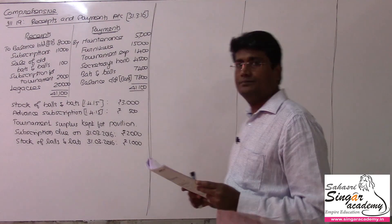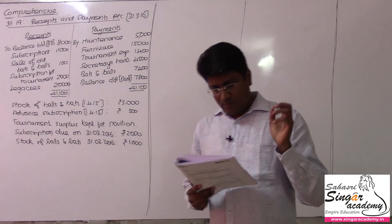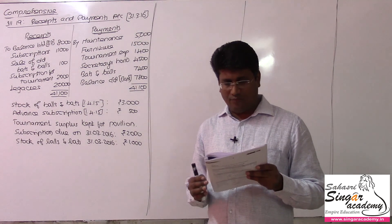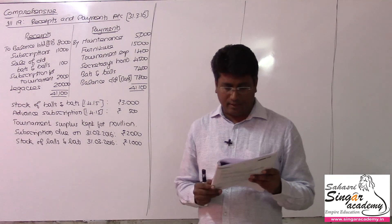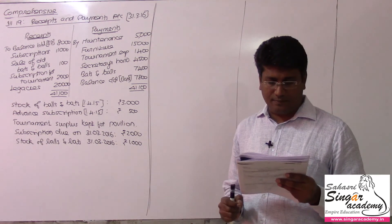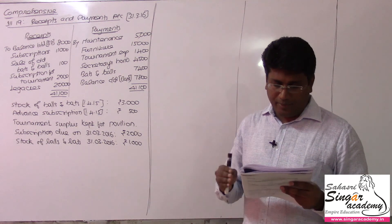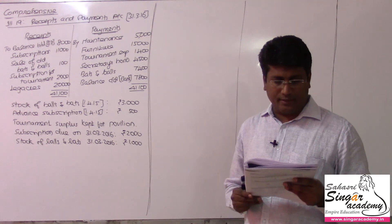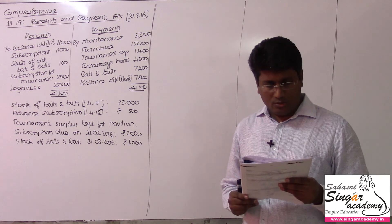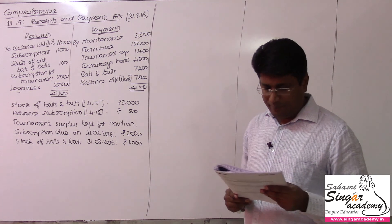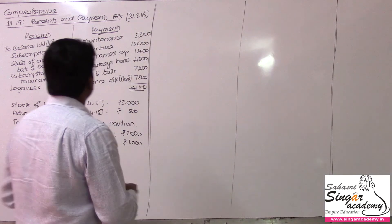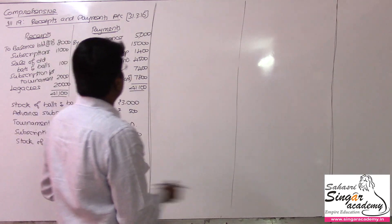Illustration number 19. From the following receipts and payments accounts of Coimthur Cricket Club for the year ending 31st March 2016, prepare an income and expenditure account for the year ending 31st March 2016 and a balance sheet as on that date. So we have to prepare income and expenditure and balance sheet for the year ending 31st March 2016.